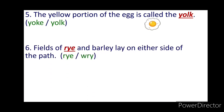Number six: Fields of rye and barley lay on either side of the path. R-Y-E means a grass grown extensively as a grain and a member of the wheat family, whereas W-R-Y means twisted into an expression of disgust or disappointment.